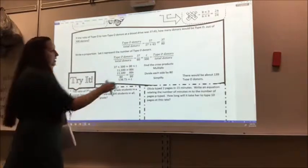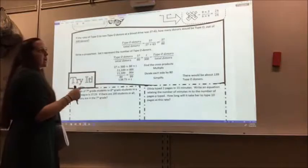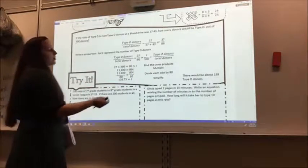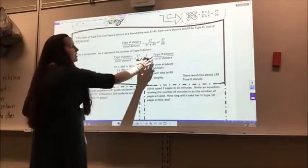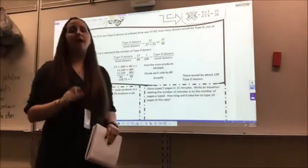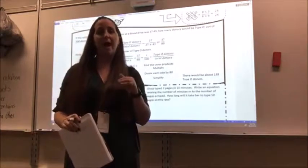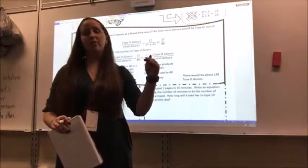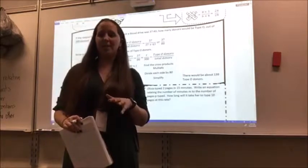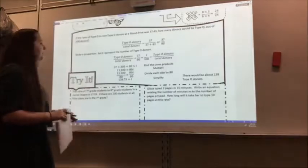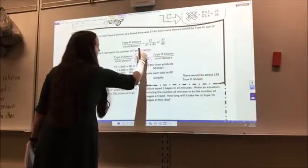So I can write my proportion: 37 over 80, which is the ratio I came up with, equals t, because that's what I'm asked for—the number of donors that are type O—out of the total number of donors, 300. Notice that I have type O over total, type O over total. If you need to set your proportions up that way, do so. It's really important that you have whatever it is on the top and the bottom be the same. So if you have type O donors on the top, it needs to be type O donors on the top of the other side of your equation as well. Otherwise it won't end up being a proportional relationship.